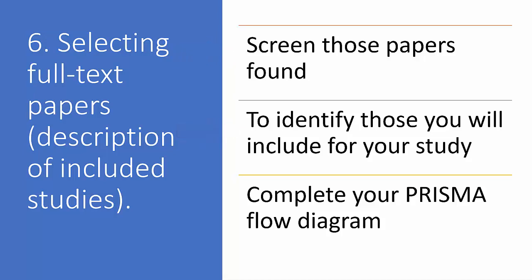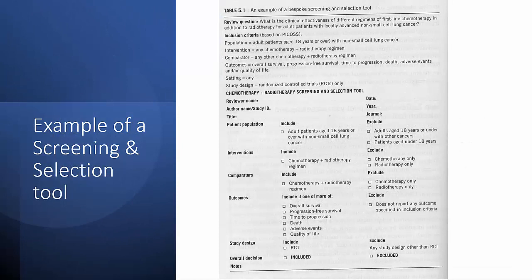This is a deeper level of screening compared to when you simply screen the titles. You are also likely to carry out an initial critical appraisal at this stage to finally remove any inappropriate papers or papers deemed to be too poor in quality. The completion of this stage will very likely allow you to complete your own PRISMA flow diagram. This slide shows a screening and selection tool taken from Boland et al., illustrating the greater level of consideration than at the title and abstract stage.